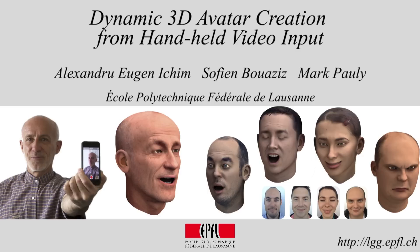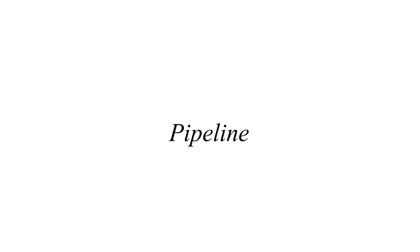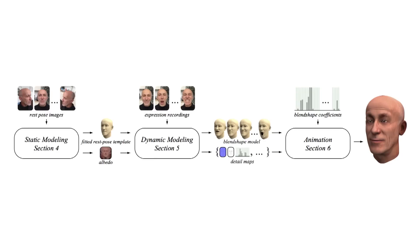In this paper, we propose a software pipeline for building fully rigged 3D avatars from handheld video recordings of the user. The pipeline is split into three stages: static modeling, dynamic modeling, and animation.